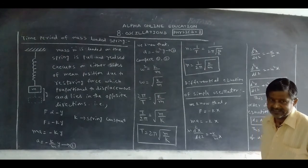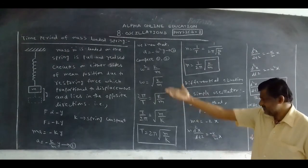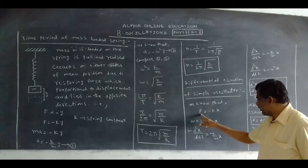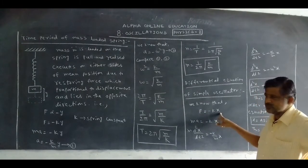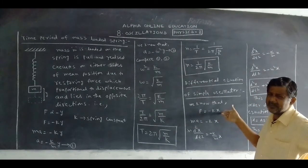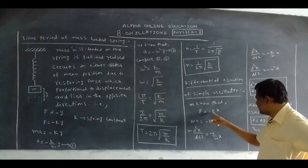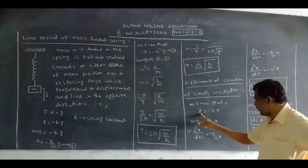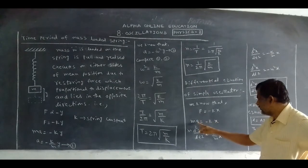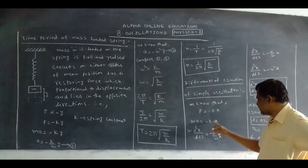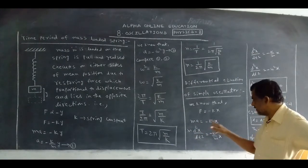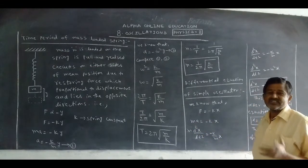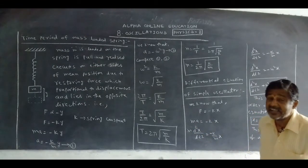How can we get it? The statement is: restoring force is proportional to displacement. Taking displacement as X, F = -KX. According to Newton's second law, F = MA, so MA = -KX. Now, what is the acceleration A?